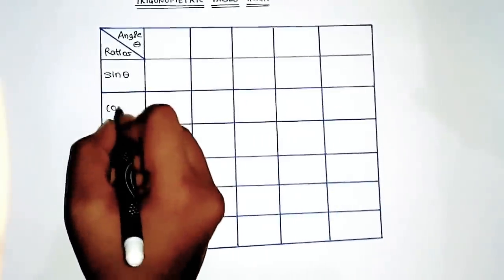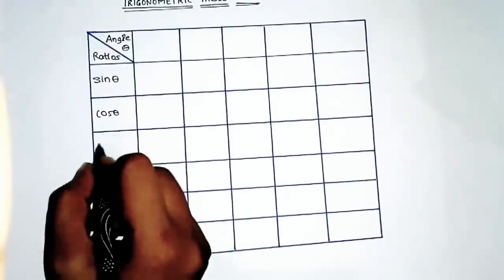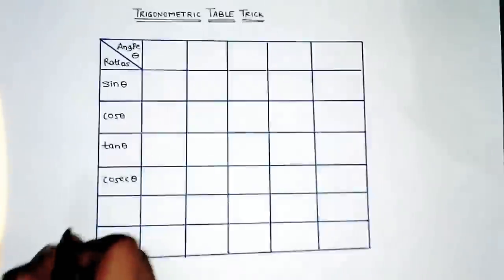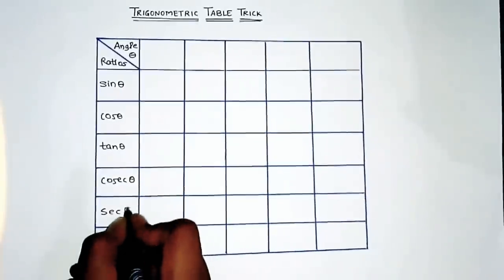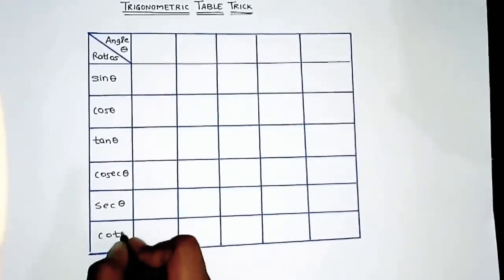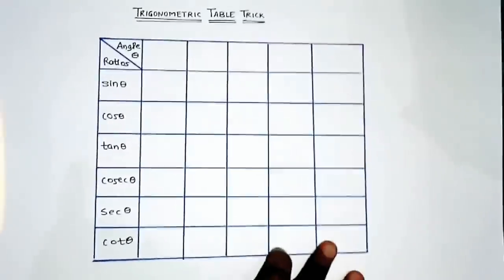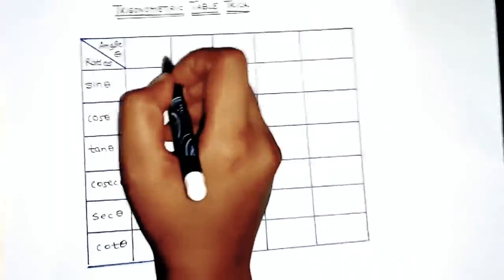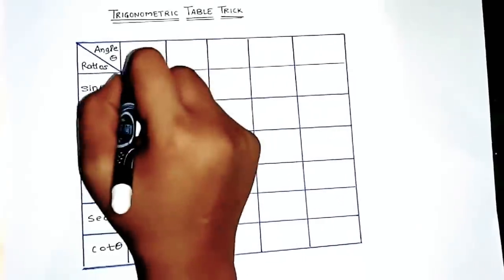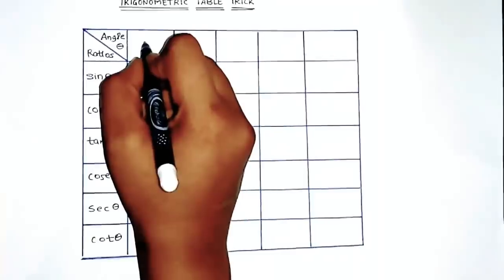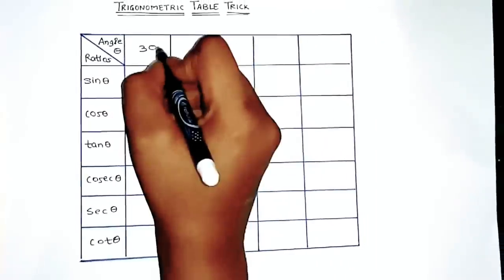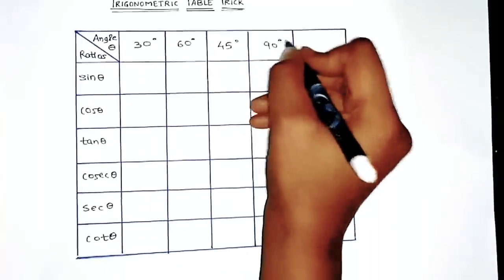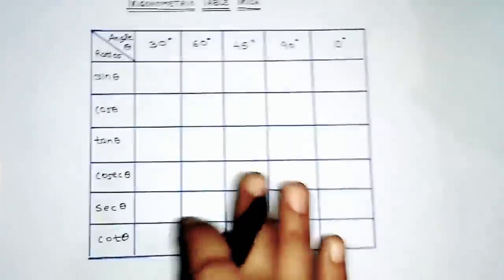Ratios name: cos theta, tan theta, cosec theta, sec theta, and cot theta. Okay friends, now just see how I'm writing about the angles. The trick lies here - you will be writing the angles in this format only. In what I am writing, see: 30 degree, 60 degree, 45 degree, 90 degree, and zero degree.